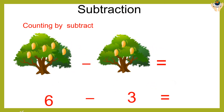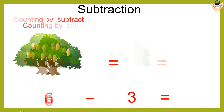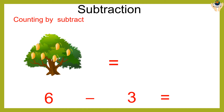Now we are going to subtract mangoes. Six mangoes minus three mangoes is equal to what? Just take away three mangoes from six mangoes and now count: one, two, three. The answer is three.